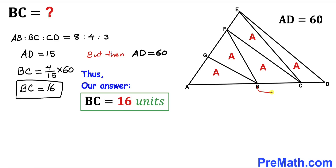So our length BC turns out to be 16 units — that's our final answer. Thanks for watching, and please don't forget to subscribe to my channel for more exciting videos.